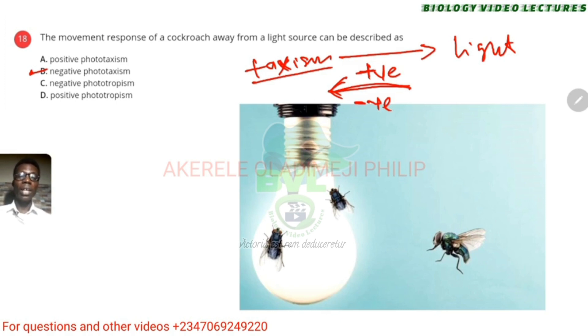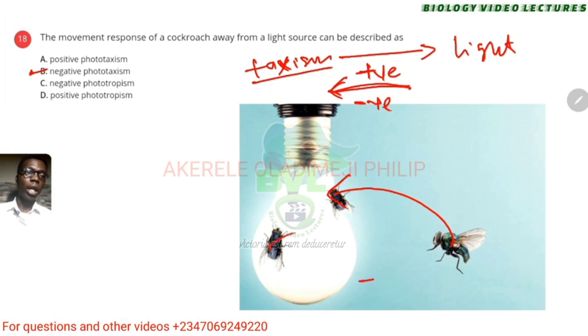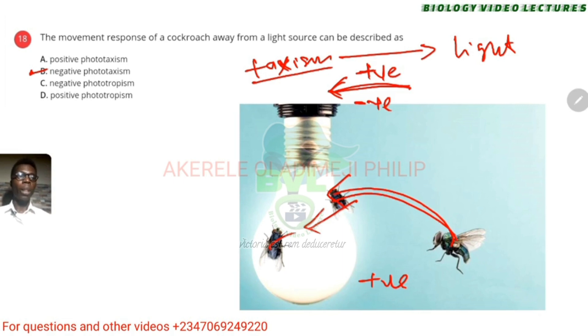Bear in mind there are really different types of taxis — we have phototaxis, chemotaxis and others. So the answer is B. These are insects moving towards a light bulb — so that would be positive phototaxis because they are moving towards the light.